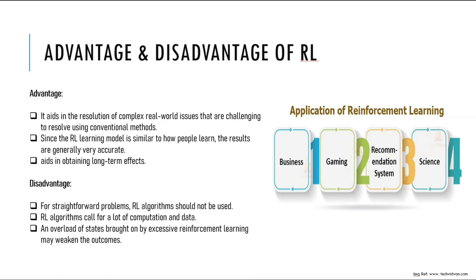Reinforcement learning works in dynamic, uncertain environments where feedback is delayed or sparse. It can also help in solving high-order, complex problems, and the solutions obtained are very accurate. The reason for its perfection is that it is very similar to human learning — we do trial and error, make mistakes, and then learn. Reinforcement learning also works with the help of feedback.